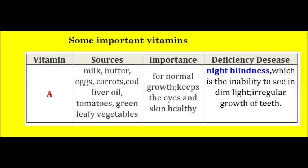Vitamin A. Sources of Vitamin A are milk, butter, eggs, carrots, cod liver oil, tomatoes, and green leafy vegetables. The importance of Vitamin A is for normal growth and it keeps the eyes and skin healthy.